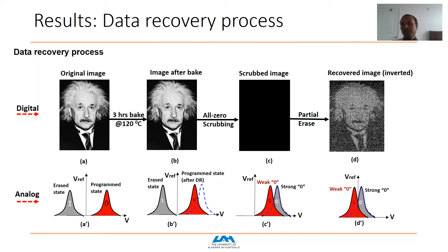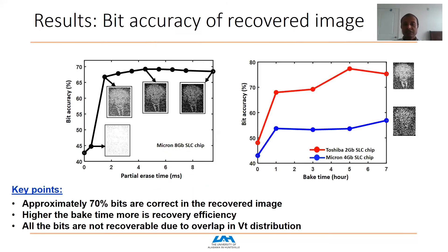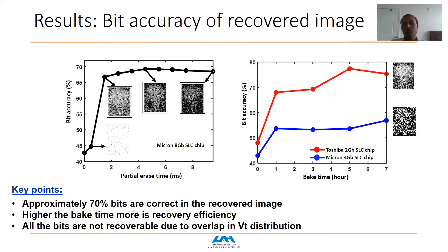In the recovery results, the key parameter is the partial erase time. Too little erase time leaves most data unrecoverable; too much time erases everything. There is an optimal partial erase time that gives the best recovery efficiency. Longer bake time increases the separation between strong and weak zeros, yielding higher bit accuracy. However, not all bits are recoverable because there is overlap between the strong zero and weak zero distributions.